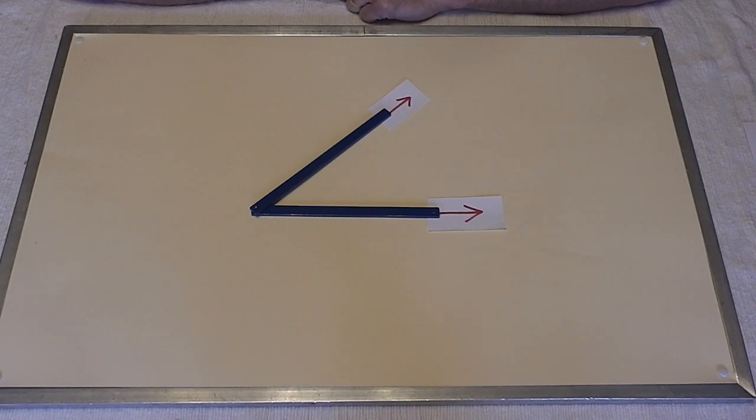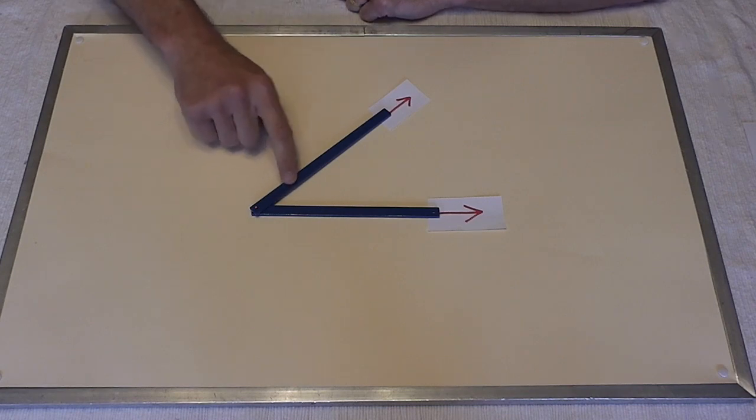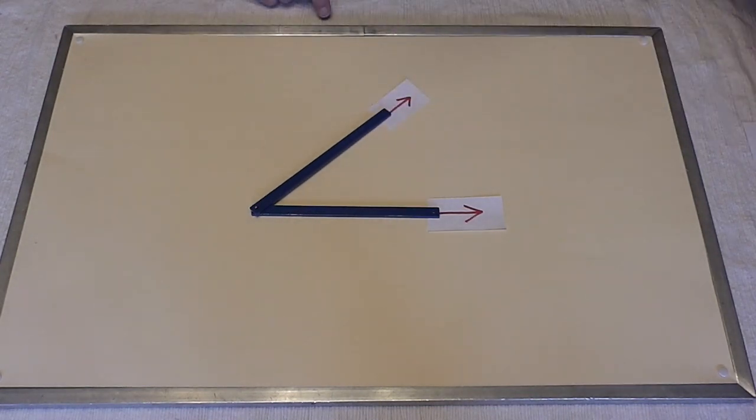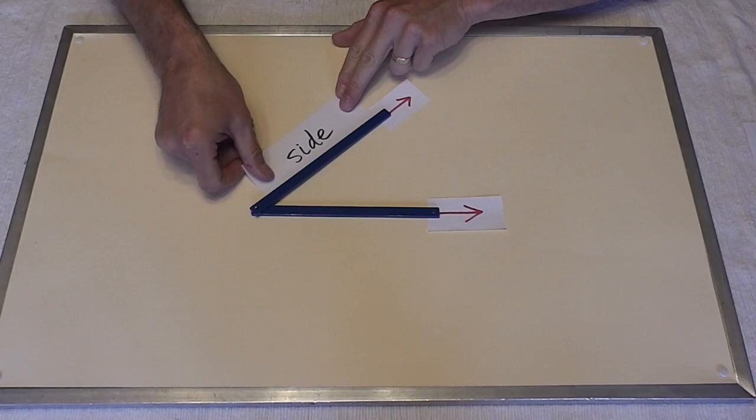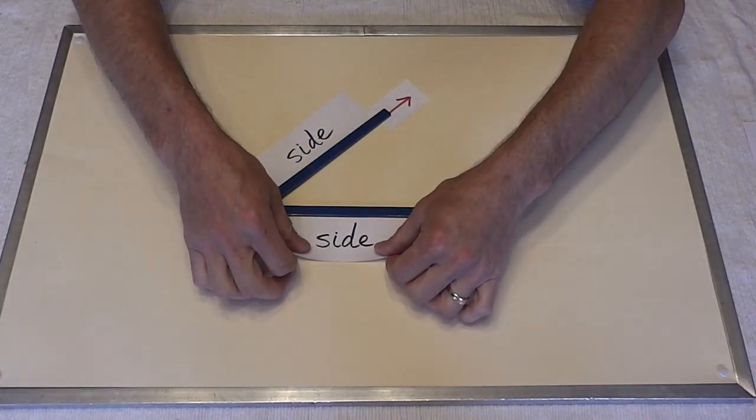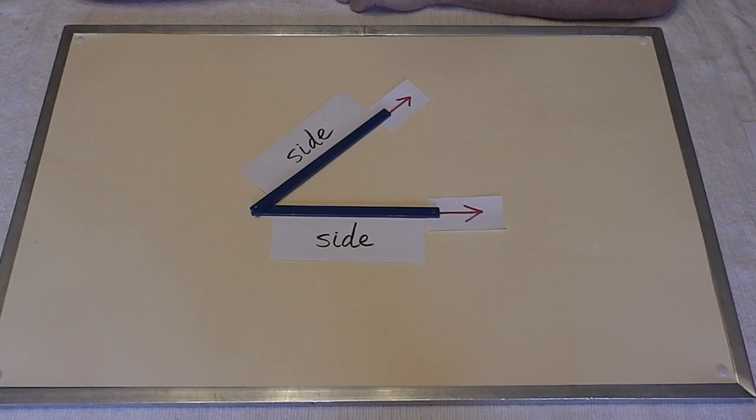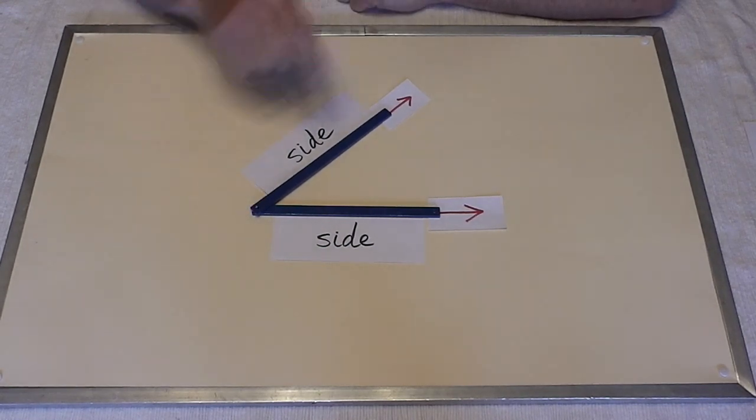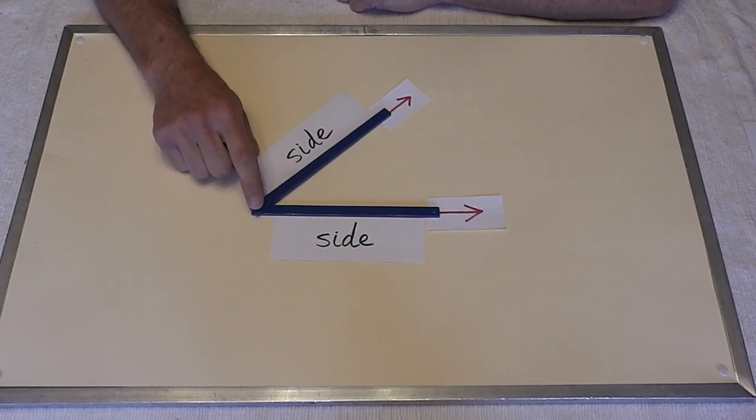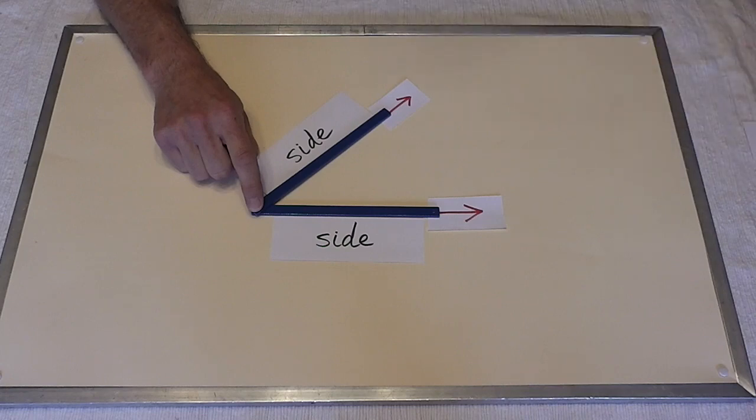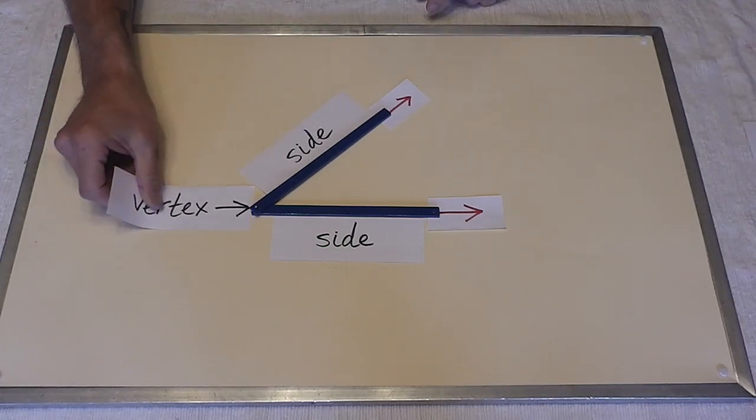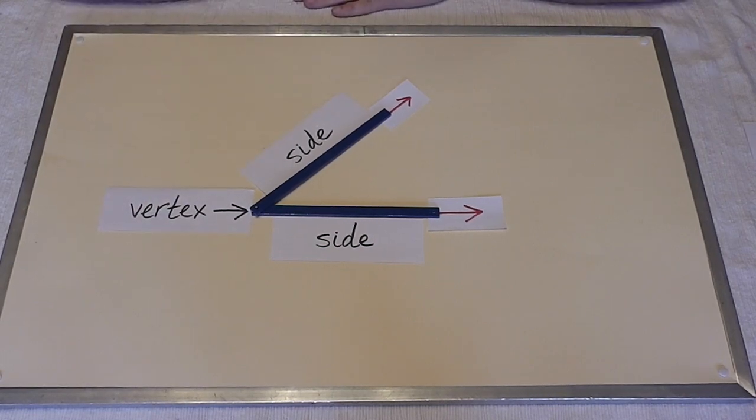And an angle has some parts. This and this are called the sides. These are the sides of the angle. Where the angle begins, where the two origins begin, is now called the vertex. The vertex. The vertex is the origin of the angle. It's the point where the two sides meet.